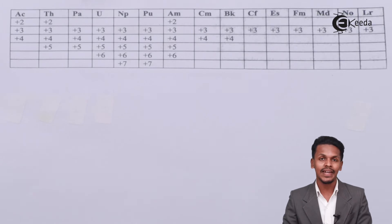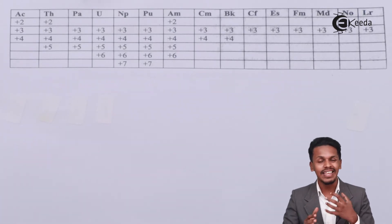Talking about the other information, actinoids are very stable in their +3 oxidation state as well as in the +4 oxidation state. These elements can easily undergo hydrolysis, and that's it.